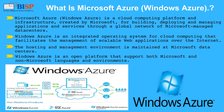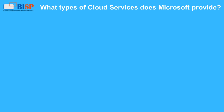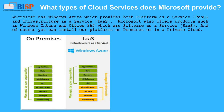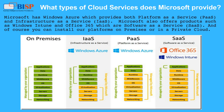Windows Azure is an open platform that supports both Microsoft and non-Microsoft languages and environments. What types of cloud services does Microsoft provide? Microsoft has Windows Azure, which provides both platform-as-a-service and infrastructure-as-a-service. Microsoft also offers products such as Windows Intune and Office 365, which are software-as-a-service. And of course you can install our platforms on-premises or in a private cloud.